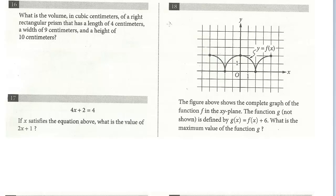In this lesson, we'll continue our review of Math Test 9, Section 3, Calculator. We're now on the start of the grid-in. So these first three questions are pretty straightforward. Let's take a look at 16. What is the volume in cubic centimeters of a right rectangular prism that has a length of 4 centimeters, a width of 9 centimeters, and a height of 10 centimeters?